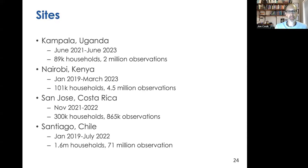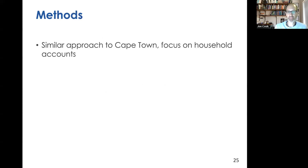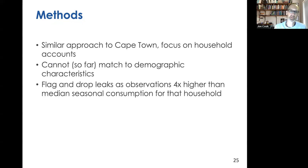The sites are Kampala, Nairobi, San Jose, and Santiago. These are different time periods — we don't have access to the exact same time period in each place, and graphs are indexed to a 'time zero' that differs across cities. Different things were happening in each city during those times. This is a relatively large dataset — tens of thousands to hundreds of thousands of accounts, and millions of records. Like in Cape Town, we're not considering commercial or industrial customers, only residential household accounts. A big weakness is that we're having trouble finding demographic characteristics to match, which is a common problem since water utilities don't observe demographic characteristics of their customers.